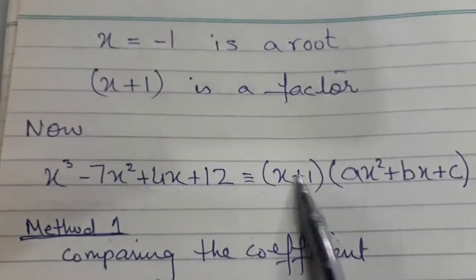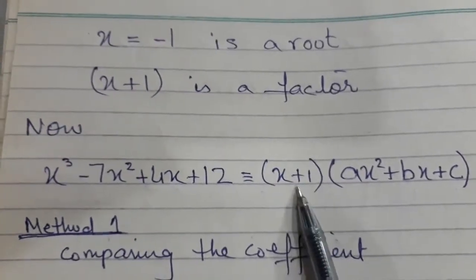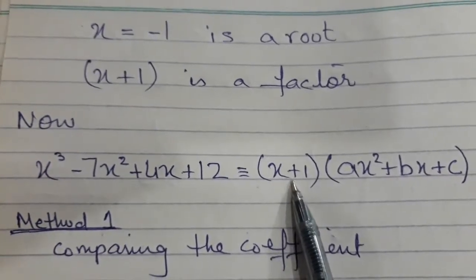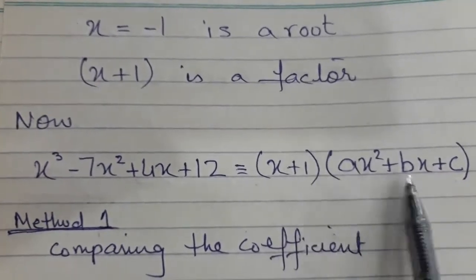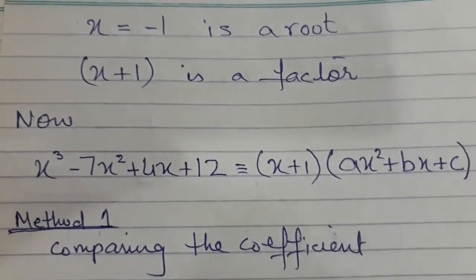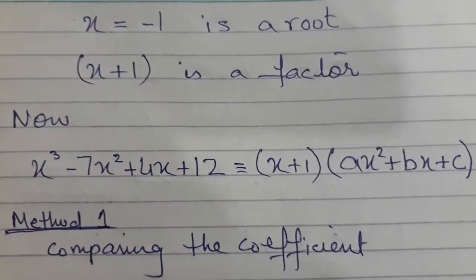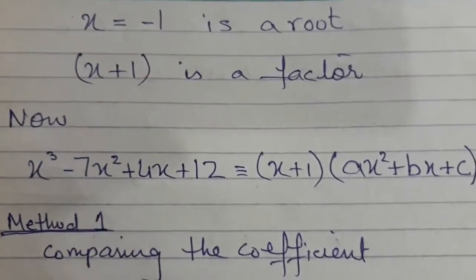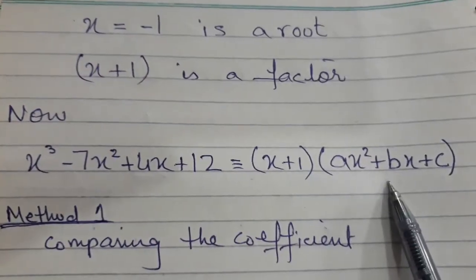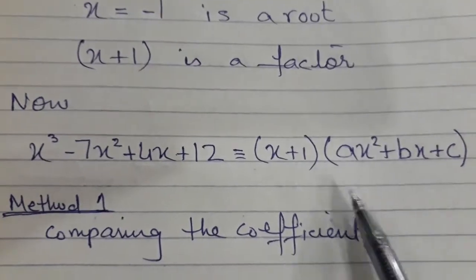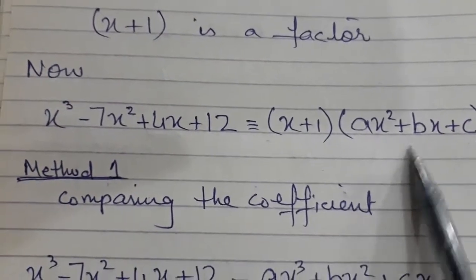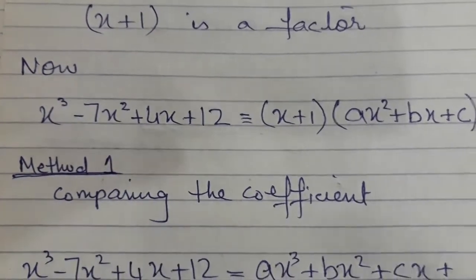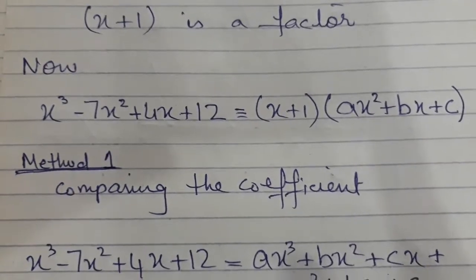So we can write x + 1 as the linear factor. Now we have to find the quadratic factor. There are three ways to do this. Let's do method number one: comparing the coefficient method.